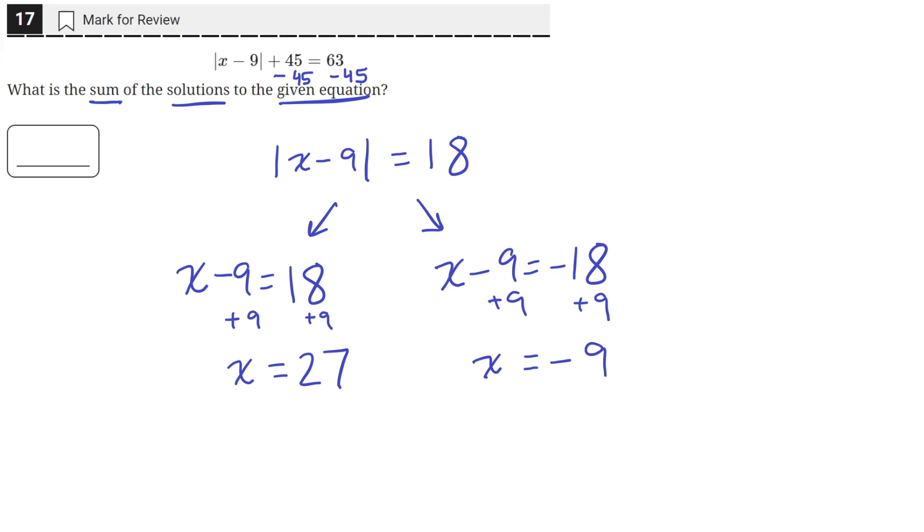And when we add them together, 27 minus 9, we get 18. So the sum of the solutions is 18.